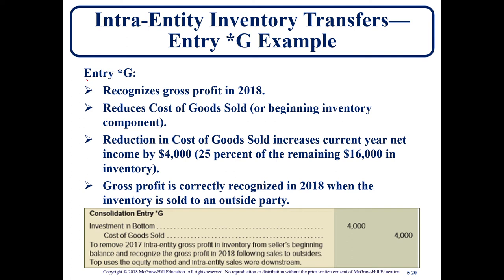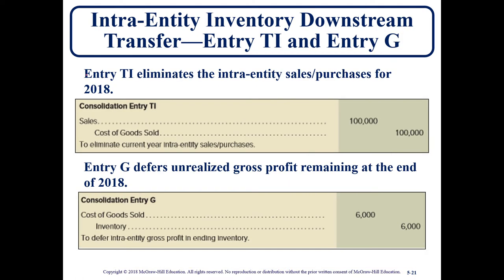Continuing with entry star G: this is the $4,000 that was deferred in 2017 and is now being recognized in 2018. If it's downstream, we debit investment in Bottom; if it's upstream, we debit retained earnings. In either case, we have a decrease in cost of goods sold — this is the second year, so we're recognizing the gain by decreasing COGS and increasing net income. That takes care of the 2017 carryover into 2018.